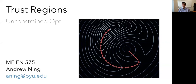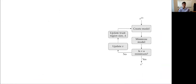We've been talking about line search based methods where we repeatedly picked a direction, did a search along that direction, chose a point, and repeated. Today we're going to talk about an alternate approach for unconstrained problems where we still use gradients. These are called the trust region approach.